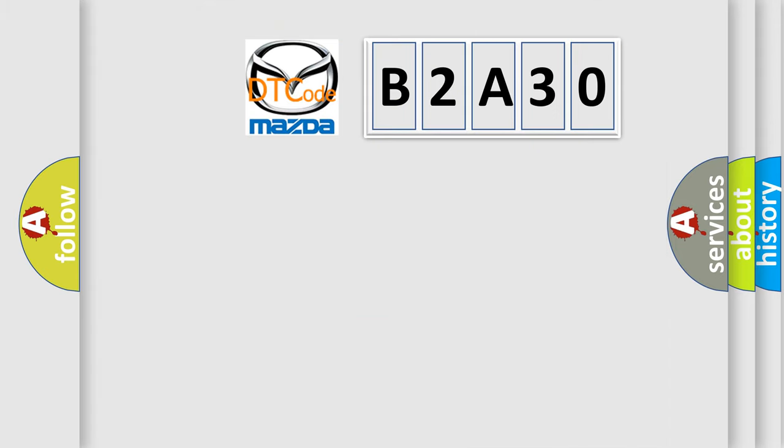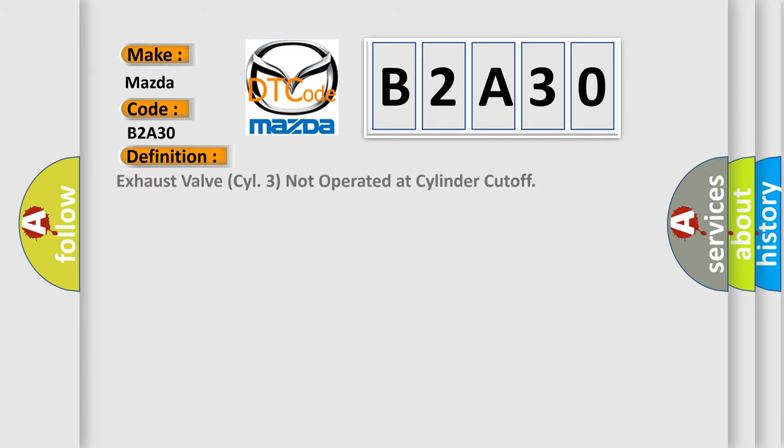So, what does the diagnostic trouble code B2A30 interpret specifically for Mazda car manufacturers? The basic definition is: Exhaust valve style 3 not operated at cylinder cutoff.